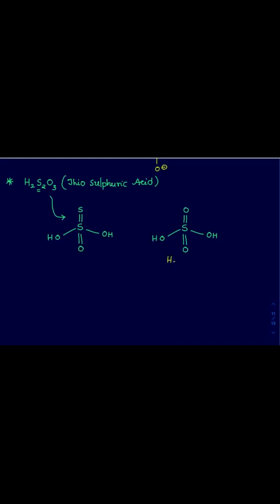In sulfuric acid, sulfur exhibits +6 oxidation state. Oxygen carries -2. OH groups are -1. Thus the central sulfur has +6 oxidation state. Coming to Thio-sulfuric acid, instead of one oxygen, sulfur is placed. Oxidation state will not change for all atoms. So in Thio-sulfuric acid, one sulfur has -2 oxidation state and central sulfur has +6 oxidation state.